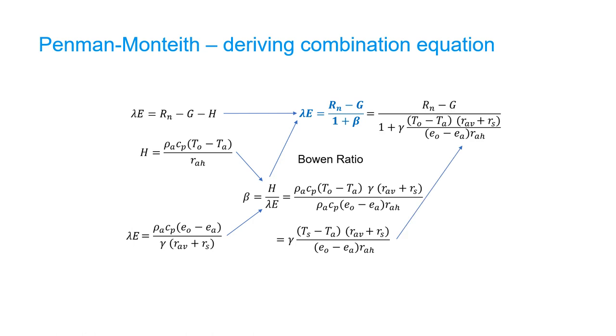there are still T-node surface temperature and E-node vapor pressure inside the surface in this equation. Therefore, the next step is to eliminate these variables from the equation by making some assumptions.